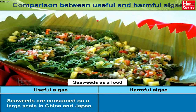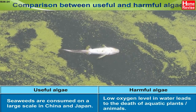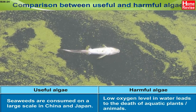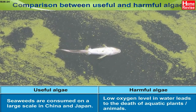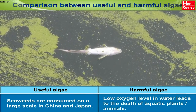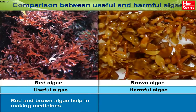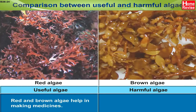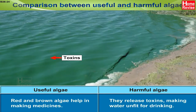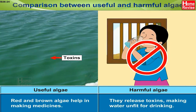Seaweeds are consumed on a large scale in China and Japan. Red and brown algae help in making medicines. Low oxygen levels in water lead to the death of aquatic plants and animals. Harmful algae also release toxins, making water unfit for drinking.